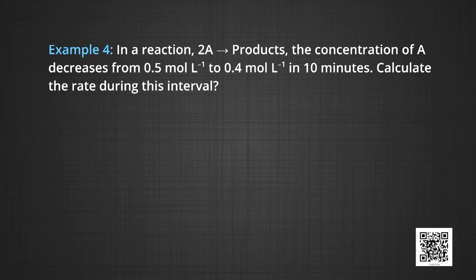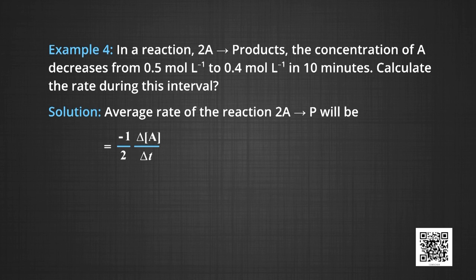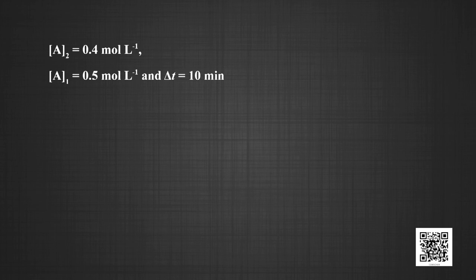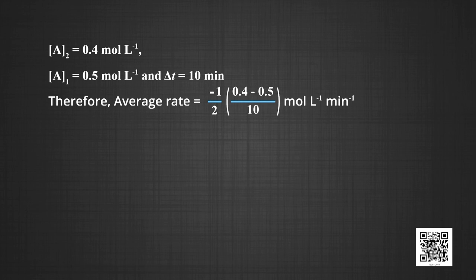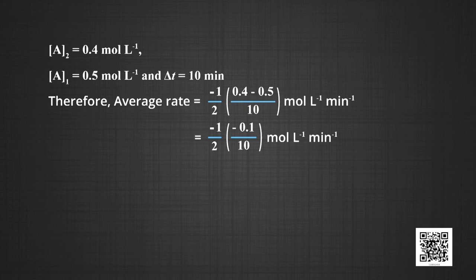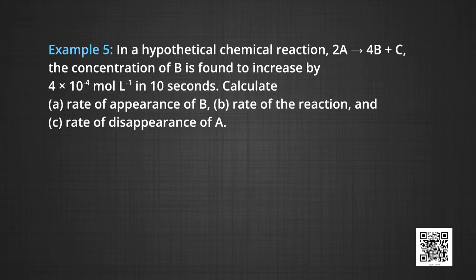Another example: the concentration of A decreases from 0.05 mol/L to 0.04 mol/L in 10 minutes. Calculate the rate during this interval. For the reaction 2A gives products, the average rate equals minus (1/2) × delta[A]/delta T equals minus (1/2) × (A2 − A1)/(T2 − T1). With A2 = 0.04 mol/L, A1 = 0.05 mol/L, and delta T = 10 minutes, the average rate equals minus (1/2) × (−0.1/10) equals 5 × 10⁻³ mol/L/min.